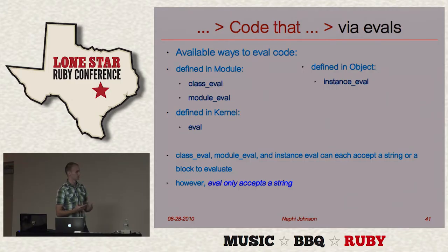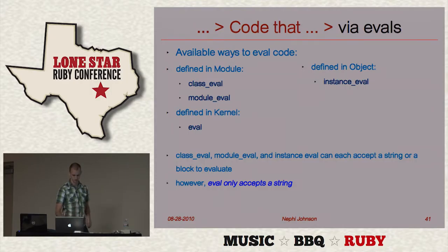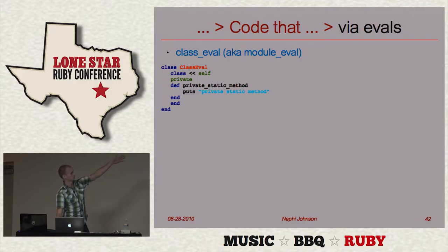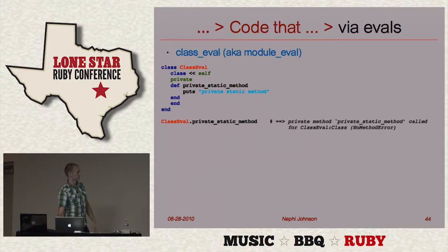We can do the same thing using evals. class_eval, module_eval, and instance_eval are all very similar — they can accept either a string or a block. But plain eval accepts only a string and works a little differently.